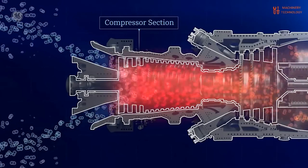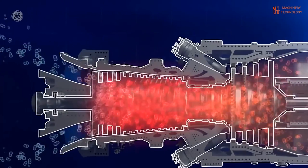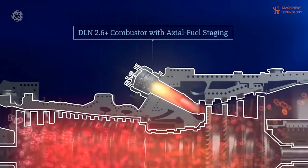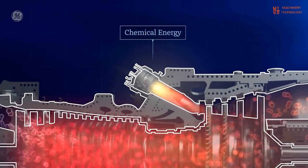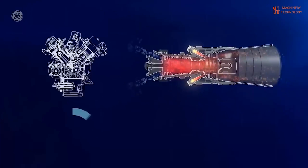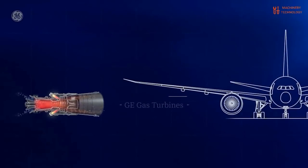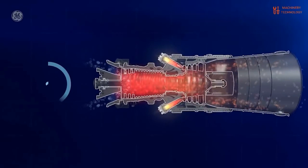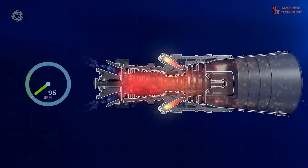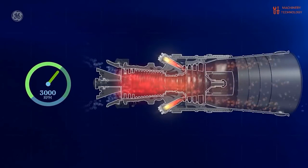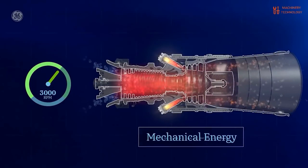Gas turbine engines are theoretically extremely simple. They have just three parts. First, the compressor compresses the incoming air to high pressure. Second, the combustion area burns the fuel and produces high-pressure, high-velocity gas. Third, the turbine extracts energy from the high-pressure, high-velocity gas flowing from the combustion chamber.